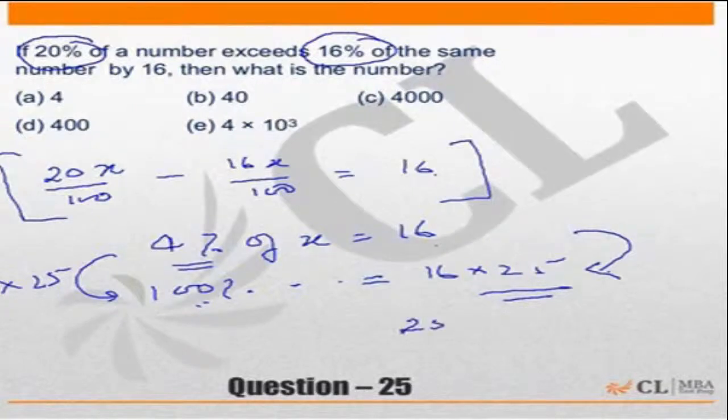25 into 10 is 250. 25 into 6 is 150. 400.